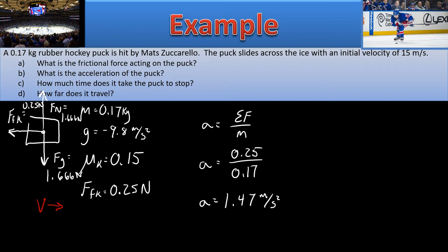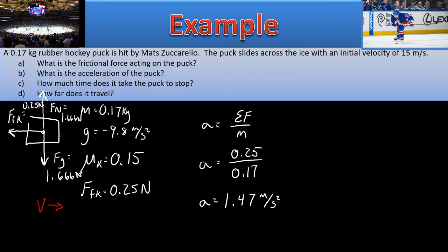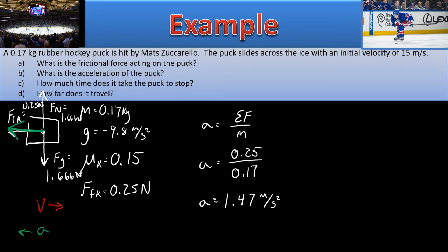What direction are you accelerating based on our free body diagram? You're actually moving to the right but slowing down, so your acceleration must point in the opposite direction — the same direction as your net force. The net force is the frictional force, so it points to the left. We make the acceleration negative: negative 1.47 meters per second squared. That's what shows it's slowing down — the velocity and acceleration are opposite each other.